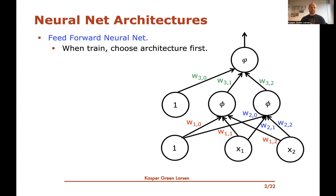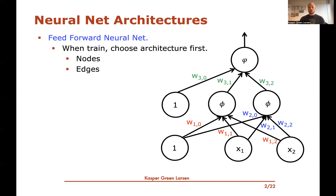The basic idea is when we're training a neural network, which we will cover in some of the next videos, before you start training, you choose the architecture of the neural net first. The architecture is the nodes or the neurons, all the edges of the network, and also all the activation functions. This is something that we choose before we start training.